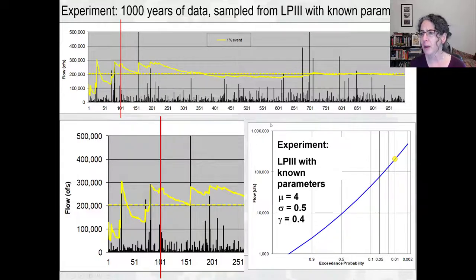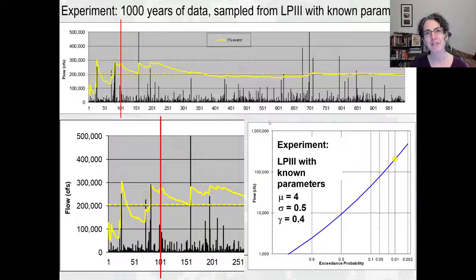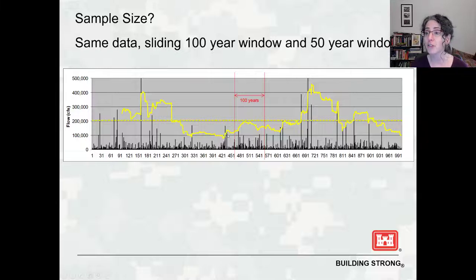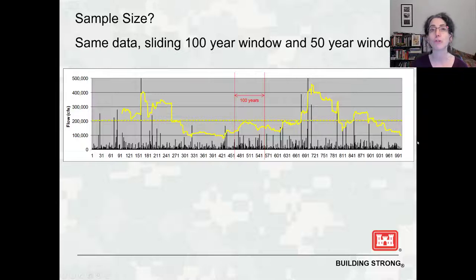On the next slide, I'm going to show a moving 100-year record. Instead of the record increasing as we move across the thousand years, I'm always going to have 100 years in a moving window going across, and estimate the 1% event with 100 years at a time. As expected, when we've got a period including these big events, our estimate of the 100-year flow is really high. Back where we didn't have any big events, the estimate of the 100-year flow is really low. This shows the span of our uncertainty in trying to estimate this probability distribution from only a 100-year sample.